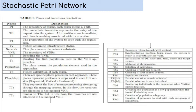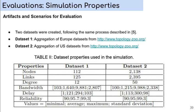After we have presented the vital aspects of our project, in this slide, we will present the two datasets used for the simulation. The first dataset is an aggregation of European datasets from topology-zoom.org. And the second dataset is created from the aggregation of EU datasets from the same site. These two datasets were created following the same process described in paper 5. And in table 2, we have some properties of these two datasets. We have the nodes, links, degree, bandwidth, delay, reliability values. As you can see, the dataset 2 is more complex, has more quantity of nodes, links, etc.